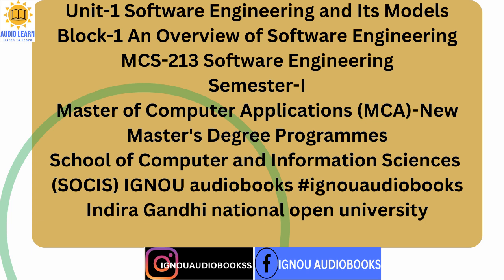Level 5 — Optimizing: The organization satisfies all requirements of Level 4. This is the last level and the organization is considered almost perfect. At this level, the entire organization continuously works for process improvement with the help of quantitative feedback obtained from lower levels. The organization analyzes its weaknesses and takes required corrective steps proactively to prevent errors. Based on cost-benefit analysis of new technologies, the organization changes its software development processes.